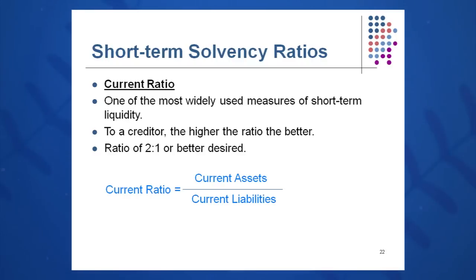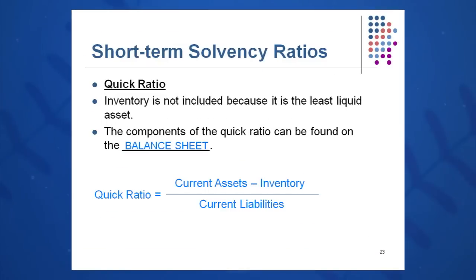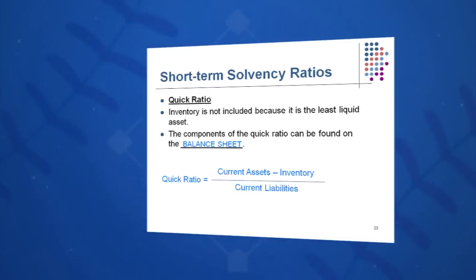We might reach a point where we have too much in current assets where we could better invest our cash. But for right now, let's look at 2 to 1. Another important ratio you want to memorize for life, especially if your company has a lot of inventory, is the quick ratio. We subtract out the inventory because it's not very liquid. So we take current assets minus the inventory amount off the balance sheet and divide by current liabilities to get our quick ratio. All items for this ratio come off the balance sheet.